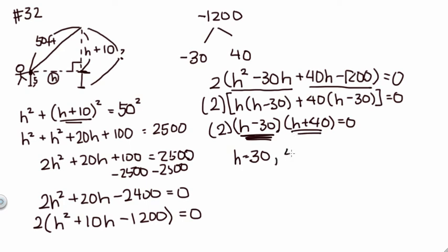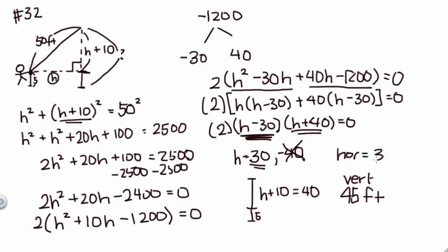But in terms of this context, it doesn't make sense to have your kite negative 40 from you because we're talking about distance, so this is the one that we're going to discard. So we have the horizontal distance is 30. But keep in mind, for vertical distance, this to here is H plus 10. So if the horizontal is 30, my vertical is 40, but his hand was already 5 feet above the ground. So overall, my vertical distance from the ground is going to be 45 feet. So I have 45 feet as my vertical and my horizontal is 30 feet. And that ends this problem.